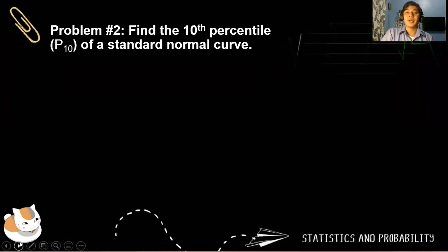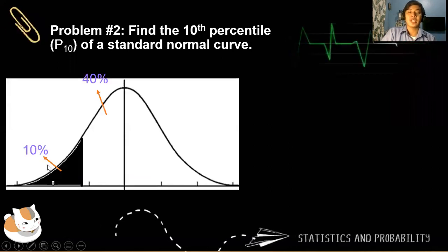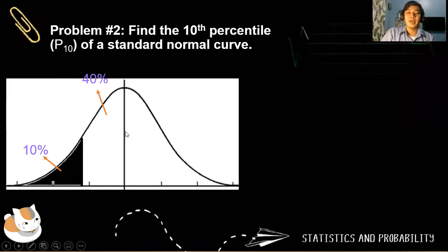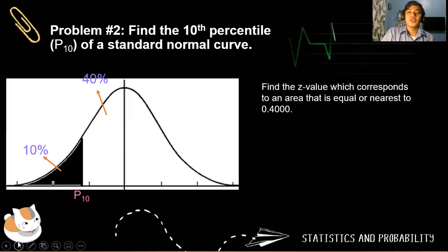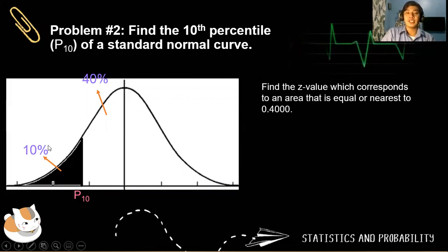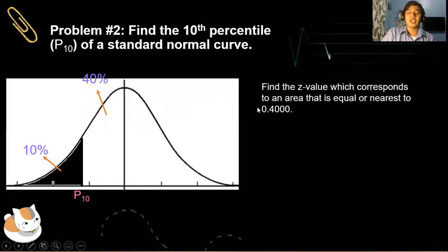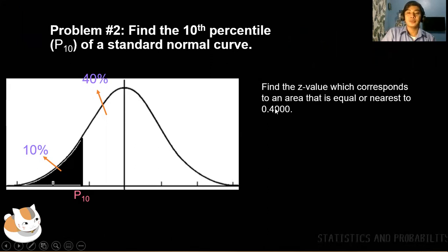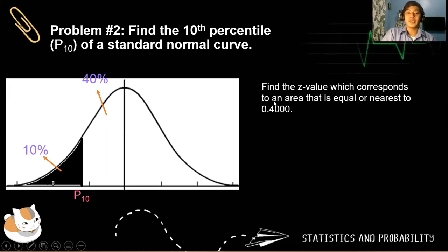Now let's proceed to the second problem: find the 10th percentile, P sub 10, of a standard normal curve. Notice that there is a remaining 40% area which is unshaded on the left half of the standard normal curve. We find the Z-value which corresponds to an area nearest to 0.4000. The operation used is 0.5 minus 0.1, so the required area is 0.4000. That is what you write on the first column of the modified assessment.